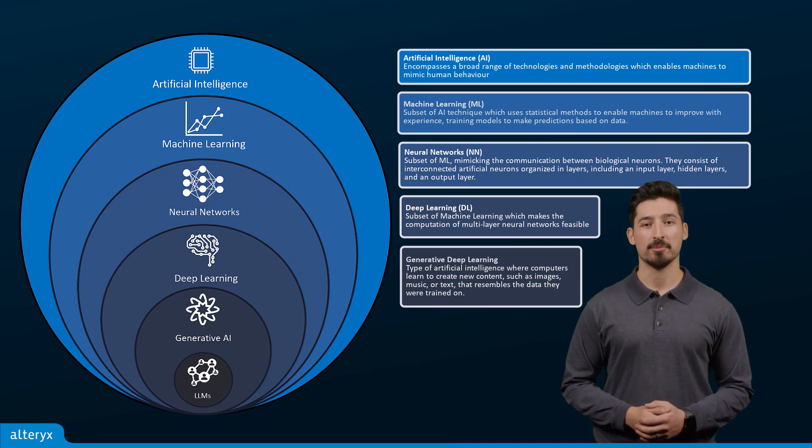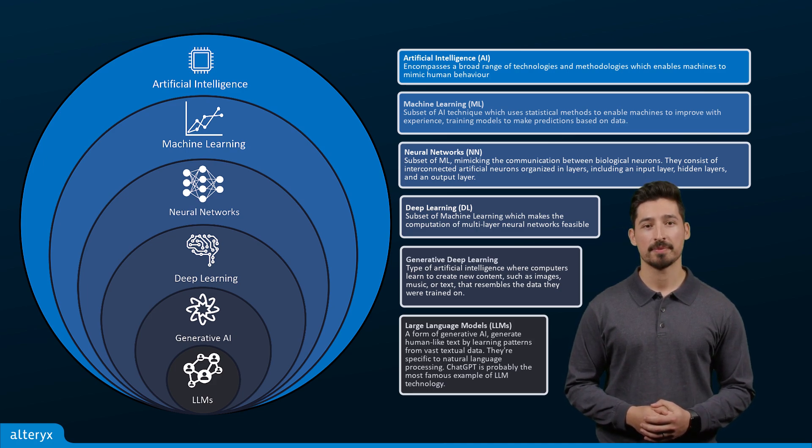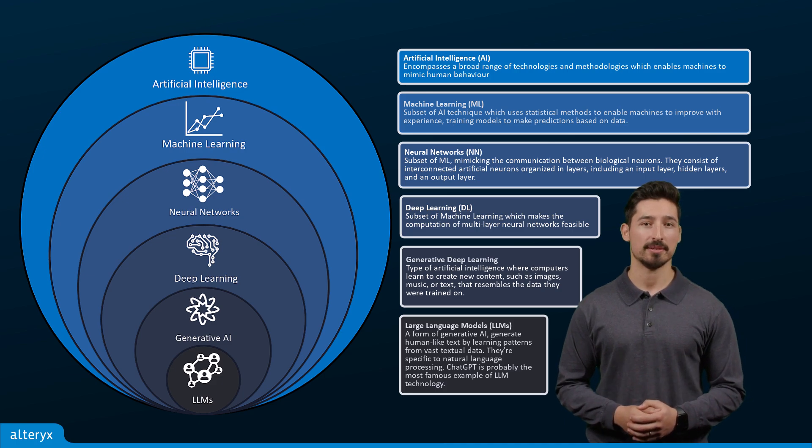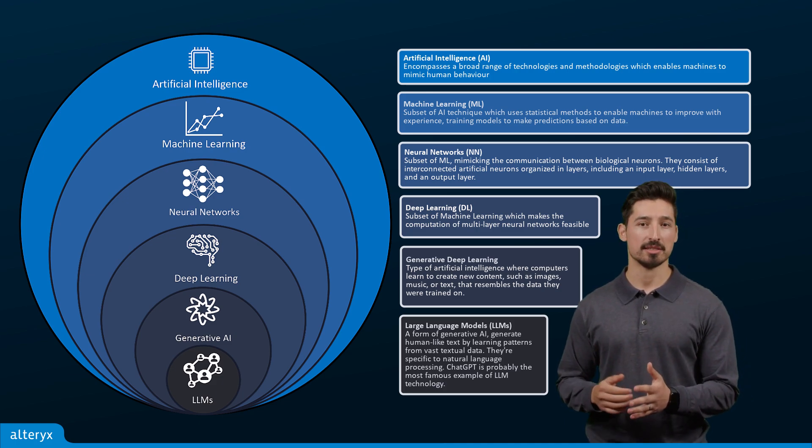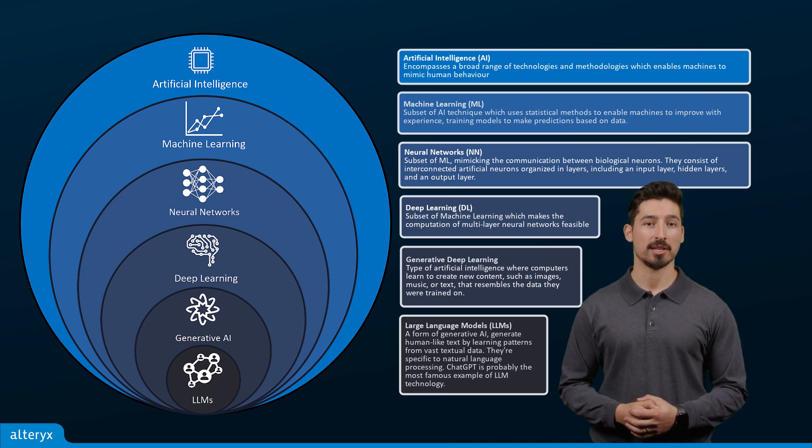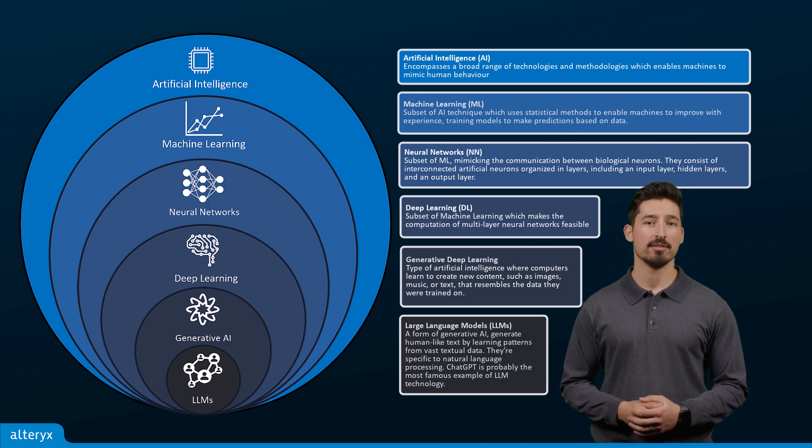Next, large language models. Those are also a form of generative AI, generating human-like text by learning patterns from vast textual data. They're specific to natural language processing. ChatGPT is probably the most famous example of large language model technology, but others exist like Flanti 5, Falcon 170B, Pythia, and Lambda 2.0.